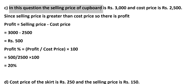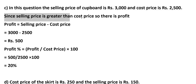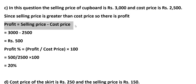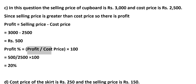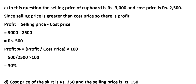In this question, the selling price of the cardboard is Rs. 3,000 and cost price is Rs. 2,500. The selling price is greater than the cost price, so there is a profit. Profit = Selling Price − Cost Price = Rs. 3,000 − Rs. 2,500 = Rs. 500. Profit percentage = (Profit ÷ Cost Price) × 100. Profit percentage formula: if loss, use (Loss ÷ Cost Price) × 100. Here, profit ÷ cost price = 500 ÷ 2,500 × 100.